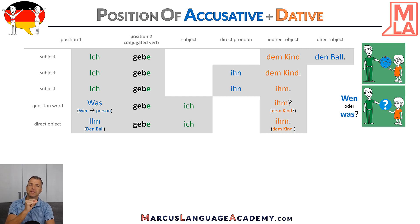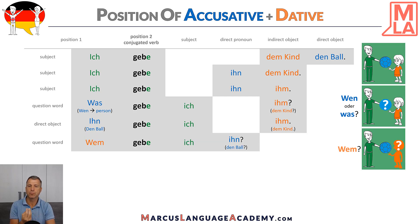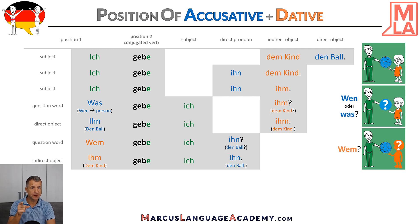And how do we ask for the dative? We use 'wem', because dative is almost always a person. So we would ask: 'Wem gebe ich ihn?' In accusative, we ask for a person with 'wen', but in dative it's 'wem' — with an M. 'Wem gebe ich den Ball?' The answer could also be: 'Dem Kind gebe ich den Ball' or 'Ihm gebe ich ihn.' We can always put it in first place when we think it's more important.